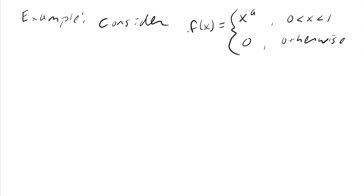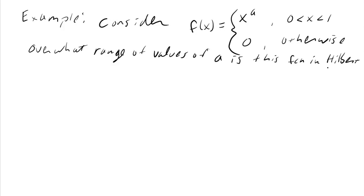Let's do a little example. Consider the function f of x equals x to the a, if x is between 0 and 1 and equals 0 otherwise. What I would like to know: is this in Hilbert space? Maybe more to the point, a has to be looked at. Over what range of values of a is this function in Hilbert space? To answer that question, we really just need to check whether the inner product is finite. That is the key issue - is the inner product of this function with itself finite, and what does it take to make that happen?